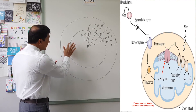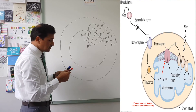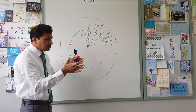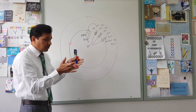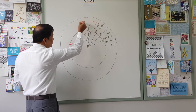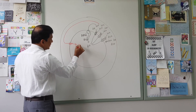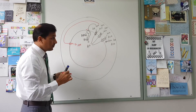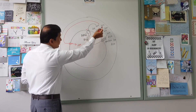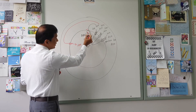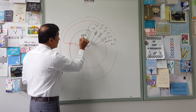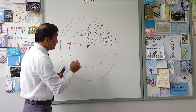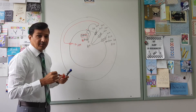Uncoupling proteins act as ionophores — they insert a pore in the inner mitochondrial membrane. When this pore is opened, protons move from the intermembrane space into the matrix without going through ATP synthase. This means protons are bypassing ATP synthase, leading to a decrease in the phosphorylation of ADP with Pi, and therefore a decrease in ATP synthesis in the mitochondrial matrix.